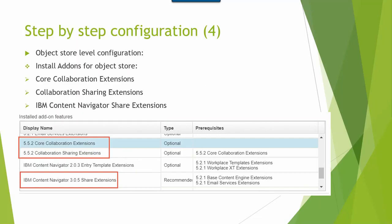Then we can go to the object store level to configure. The first action is to install add-ons for the share object store. You need to install the following add-ons: the Collaboration Extensions add-on, the Collaboration Sharing Extensions add-on, and the IBM Content Navigator Share Extensions add-on.